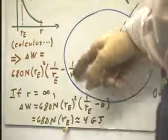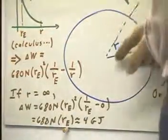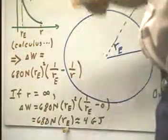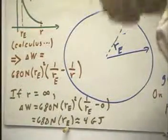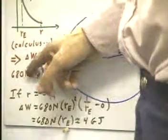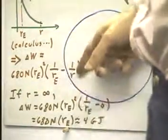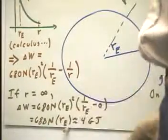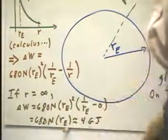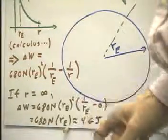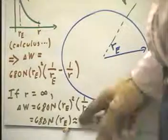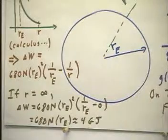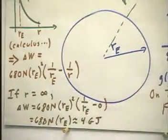If r is infinity, that is, if we take this thing all the way out, if we take it out and keep going forever, then 1/r becomes 0. As r approaches infinity, 1/r approaches 0. In that case, your Δw is just 680 newtons times r_e² times 1/r_e. This is 0, so we just don't bother with it. In that case, we have this expression. And if we evaluate this expression for r_e equals 6.4 × 10⁶ meters, we end up with something around 4.3 gigajoules. So my first estimate that it was less than 4 gigajoules wasn't quite right. My second estimate that it was less than 5 was easily right.